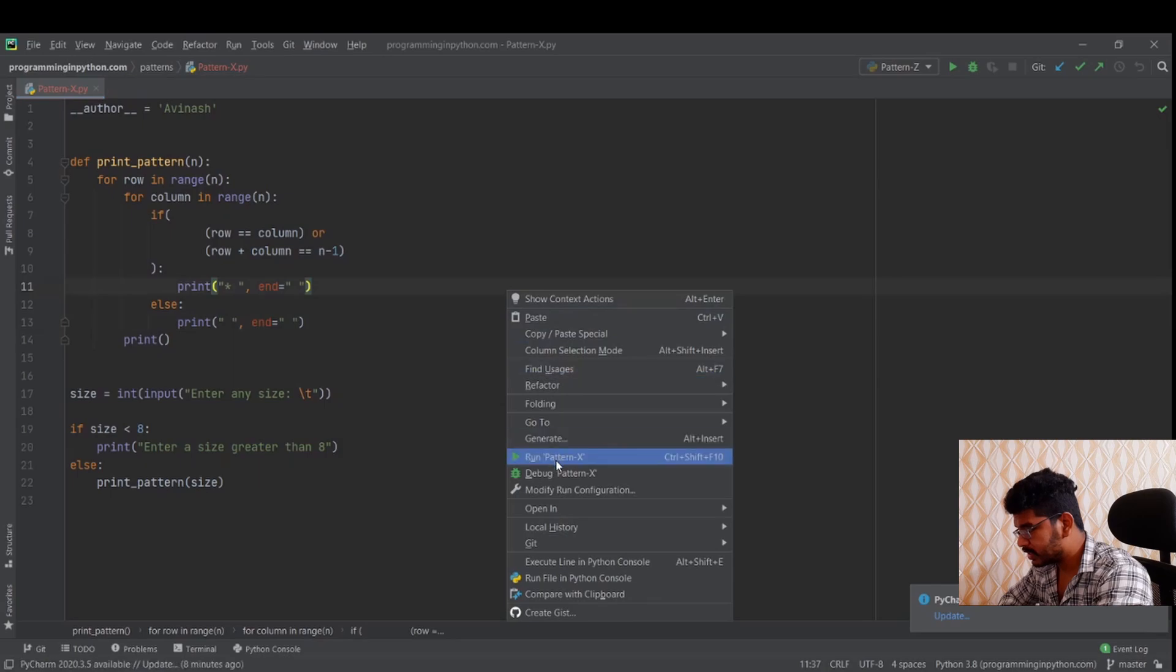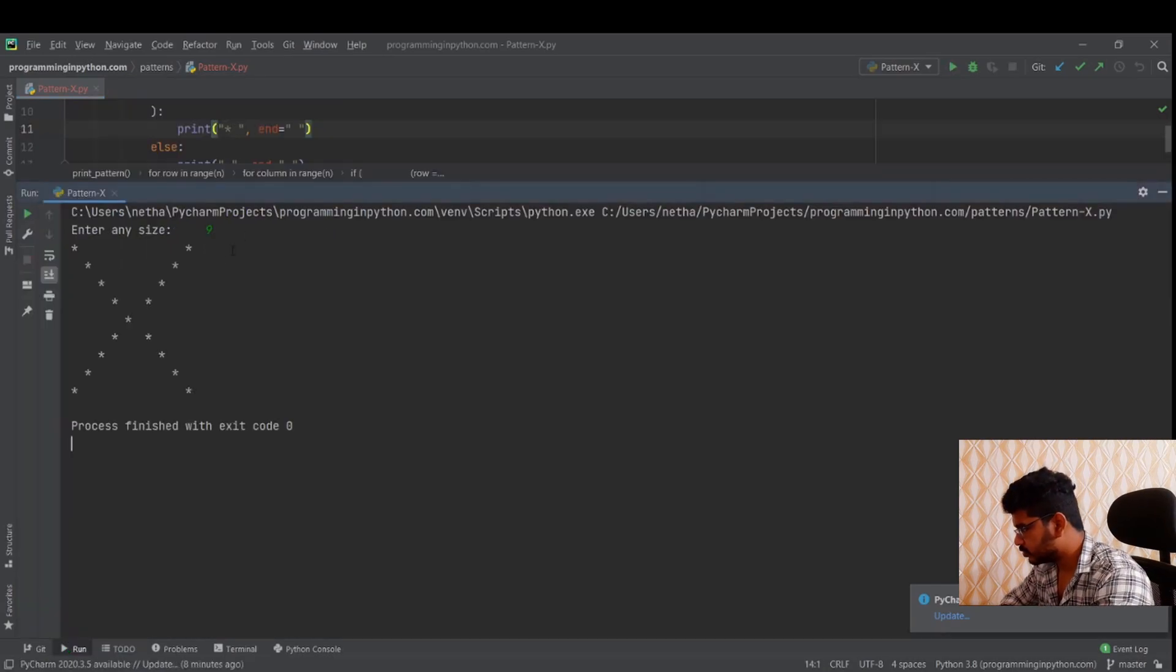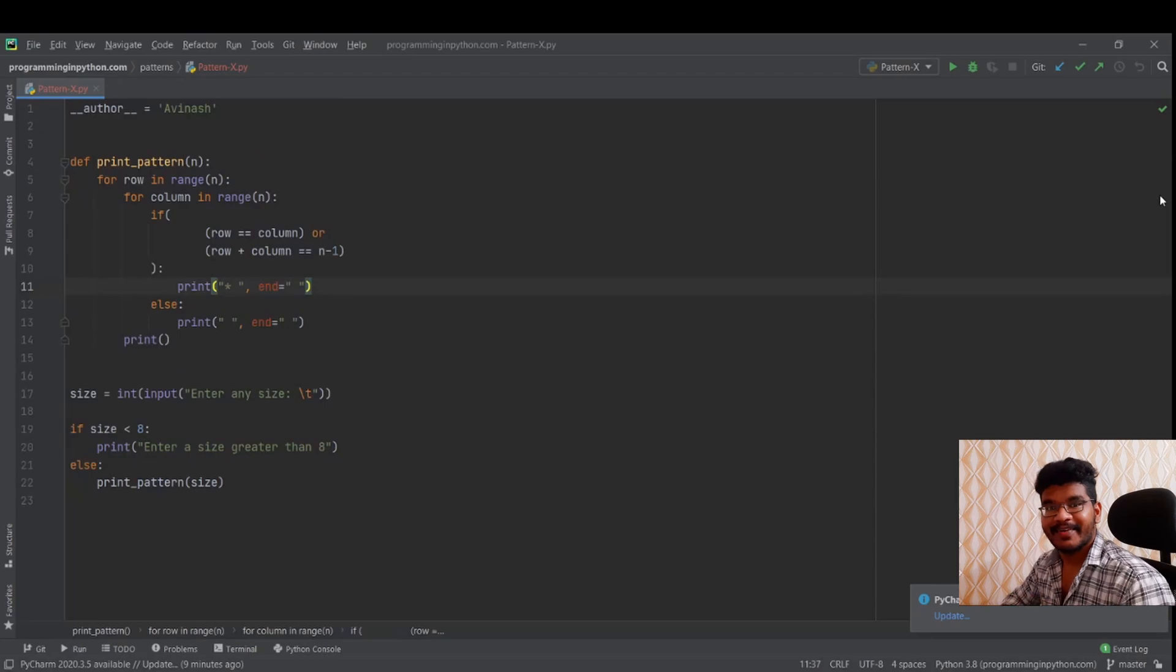Let me run this and see. Size of 9. You can see the letter X is printed perfectly. Size of 15. You can see this is the pattern of the X we are trying to print. So that's how we can print the pattern of the letter X guys.